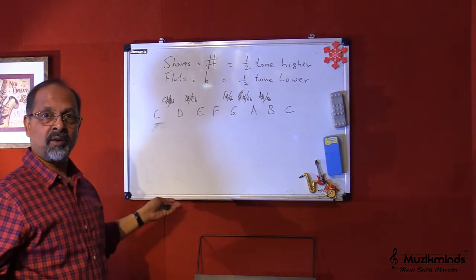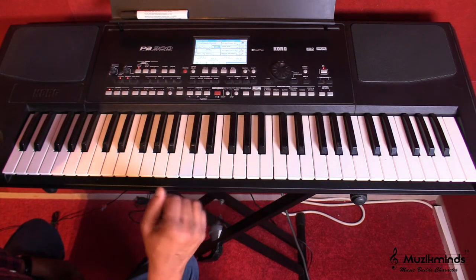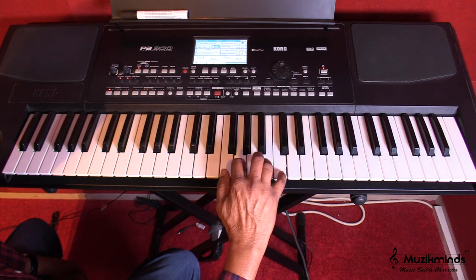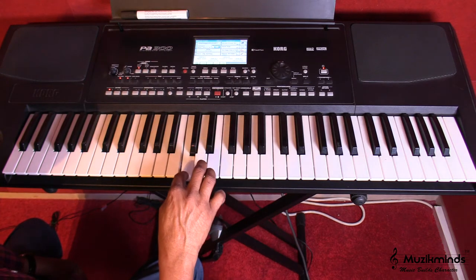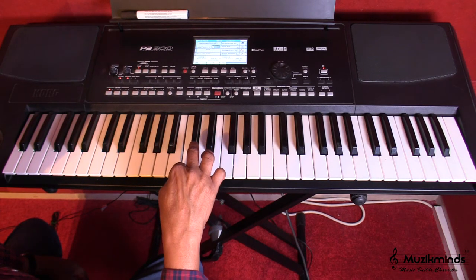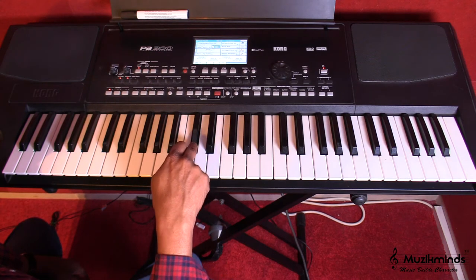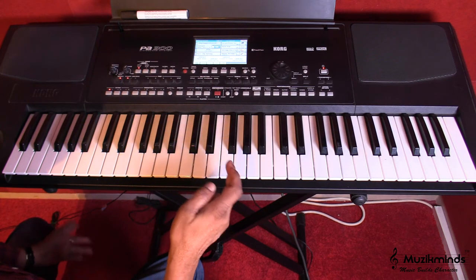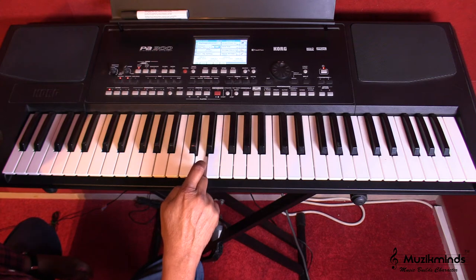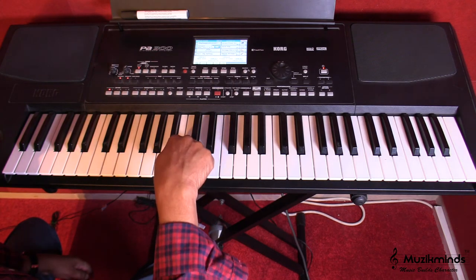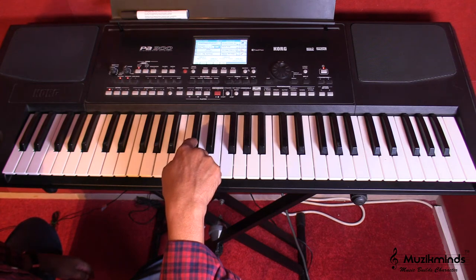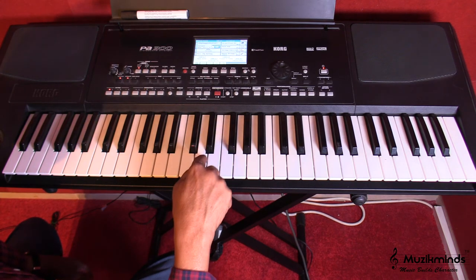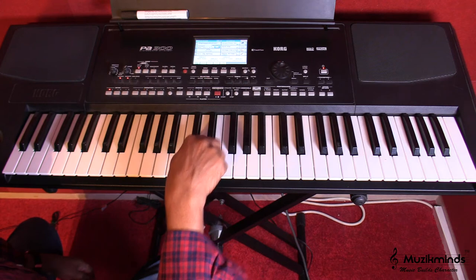Now we'll go back to the keyboard. Looking at this scale, this is C, D, E, F, G, A, B, and C. This is a C and this is a D. Now if I go up half a tone I get a C sharp, so this black key is a C sharp. If I go half a tone down it becomes a flat, so for this note — this is a D — this is a D flat. So we can either call this a C sharp or a D flat. Similarly, the next black key is a D sharp or we can call it an E flat.